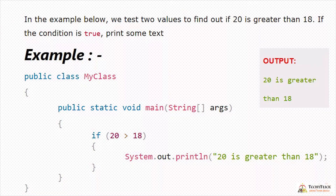In the example, we declare class MyClass with the main function. The if condition is: if(20 > 18). If that condition is true, system.out.println prints '20 is greater than 18'. Since the condition is true, the output is '20 is greater than 18'.